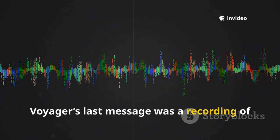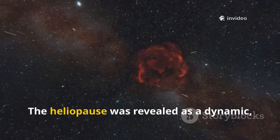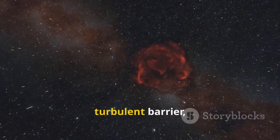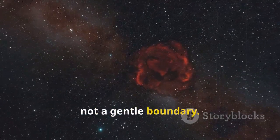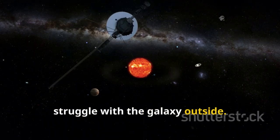Voyager's last message was a recording of this cosmic hum, the music of the galaxy itself. The heliopause was revealed as a dynamic, turbulent barrier, not a gentle boundary. Our solar system's shield is in constant struggle with the galaxy outside.